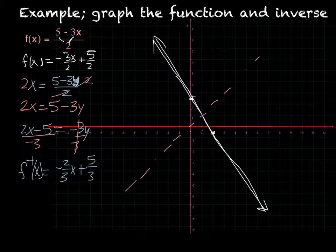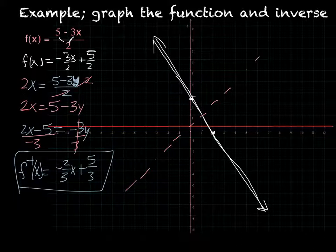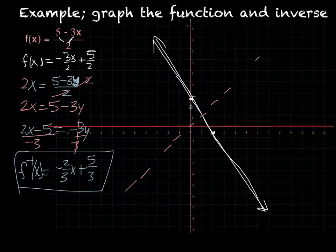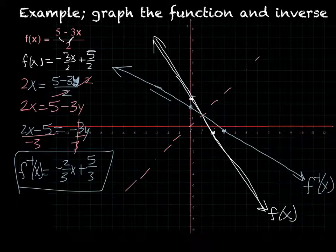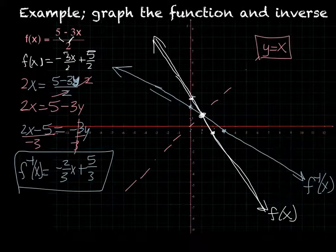My final f inverse of x equals negative 2 over 3 times x plus 5 over 3. Now I need to graph my inverse function. I'm going to cross at 5 thirds, which is about 1 and 2 thirds, so it's going to cross about right there. Then I'm going to go down 2 over 3. Those 2 points connected give the blue function, which is my f inverse. The white function is my f of x, and you can see they've rotated right around that point on my y equals x line.